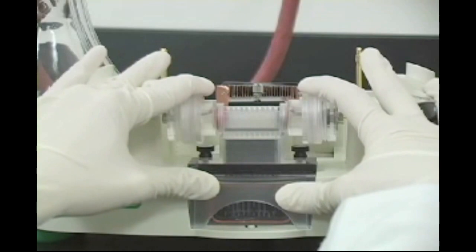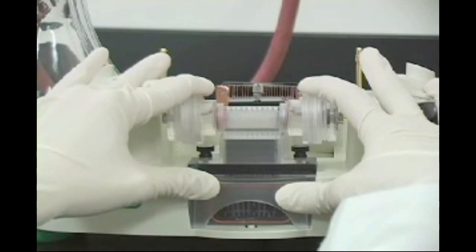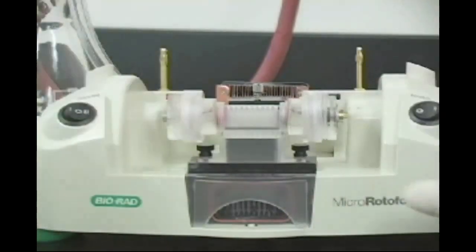At the same time, using the thumbs of both hands, press the harvesting tray against the seal of the vacuum assembly. Continue to press down on the focusing chamber for several seconds to aspirate the fractions into the harvesting tray.